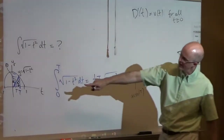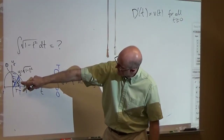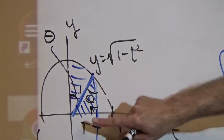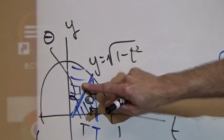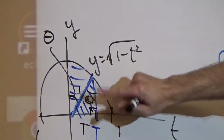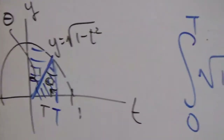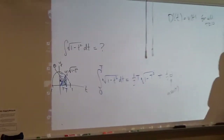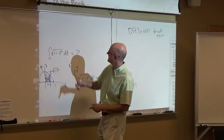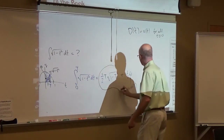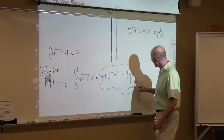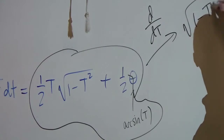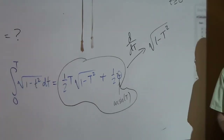Sine of that angle — looking at this right triangle — is opposite over hypotenuse. The opposite side is capital T, the hypotenuse is 1 (it's the unit circle). So sine of that angle is capital T, therefore the angle is arc sine of capital T. That would be an antiderivative of that function. The derivative of one-half T times square root of 1 minus T squared plus arc sine T over 2, with respect to capital T, should equal square root of 1 minus capital T squared.